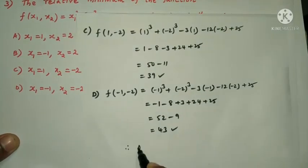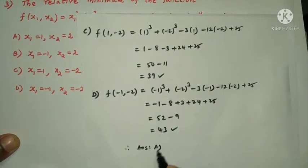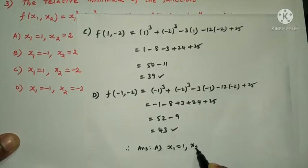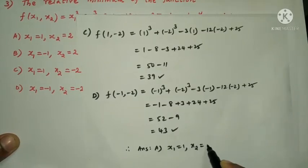Comparing all options: Option A at x1=1, x2=2 gives the minimum value of 7. Therefore the relative minimum is at Option A.